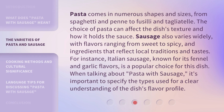Pasta comes in numerous shapes and sizes, from spaghetti and penne to fusilli and tagliatelle. The choice of pasta can affect the dish's texture and how it holds the sauce. Sausage also varies widely, with flavors ranging from sweet to spicy, and ingredients that reflect local traditions and tastes. For instance, Italian sausage, known for its fennel and garlic flavors, is a popular choice for this dish. When talking about pasta with sausage, it's important to specify the types used for a clear understanding of the dish's flavor profile.